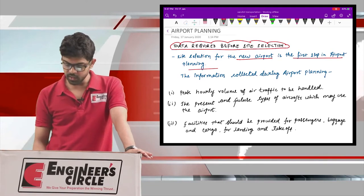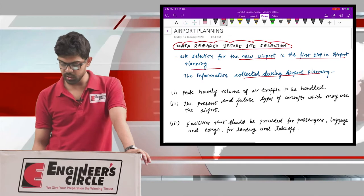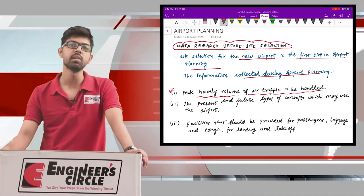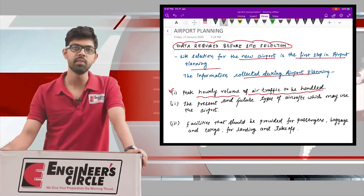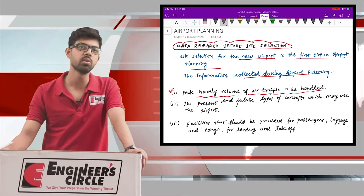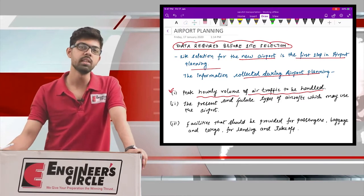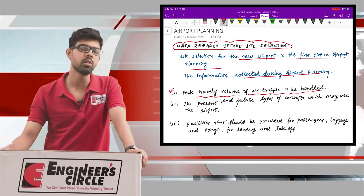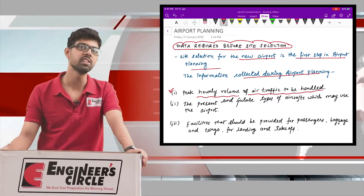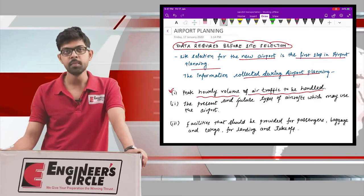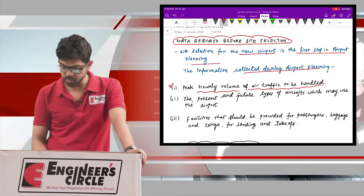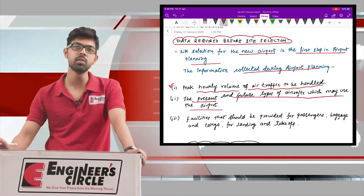The information collected during airport planning includes: first, the peak hourly volume of air traffic. Just like in highway engineering we study traffic volume — the maximum amount of traffic which will use the road — similarly, we consider the peak hourly air traffic volume, because air is the medium of travel.